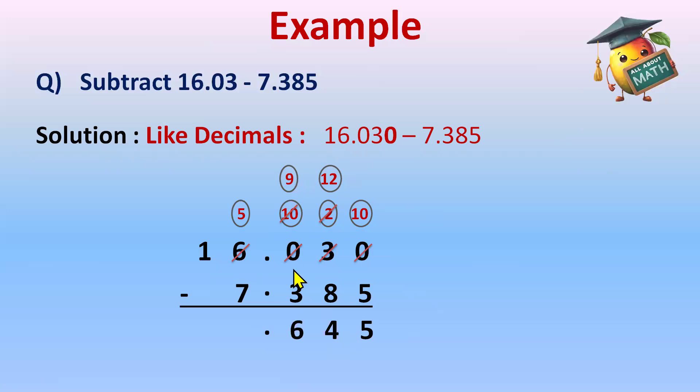Now 9 minus 3 will be 6. And we have 5 minus 7, again not possible. So 5 will borrow 1 from this 1. It will become 15, and this will be 0. 1 minus 1 is 0.